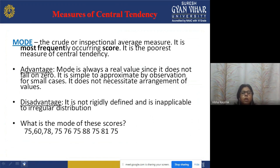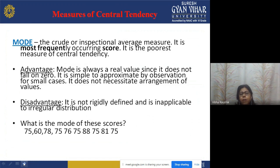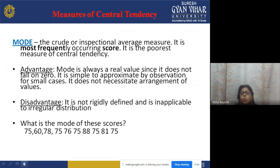The first measure of central tendency is mode, also called the inspectional average measure. Mode is the most frequently occurring score. For example, given marks of 10, 5, 6, 5, 4, 5, 6, 5 — the score most frequently repeated is 5, so 5 is the mode. The score which occurs most frequently is called the mode.